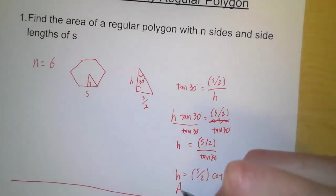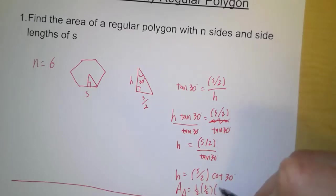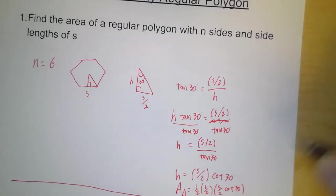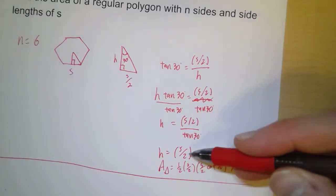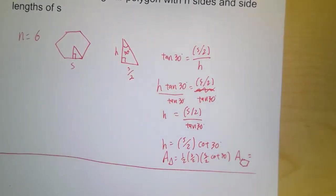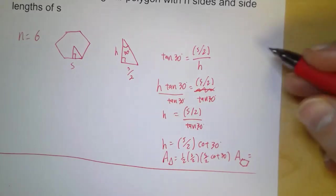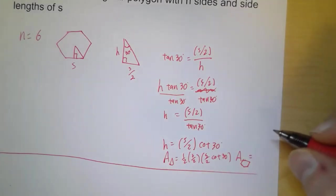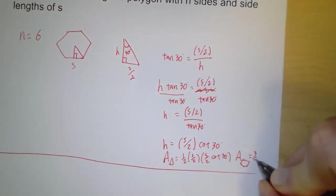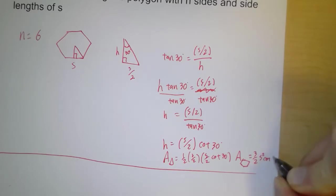The area of that triangle is one half the base, which is s over 2, times the height, which is s over 2 times cotangent of 30. And so the area of the hexagon is going to be that number times 12. So here we have one half times s over 2 times s over 2 times cotangent of 30, which gives us s squared over 8. When we multiply that by 12, what we get is 3 halves s squared times cotangent of 30 degrees.